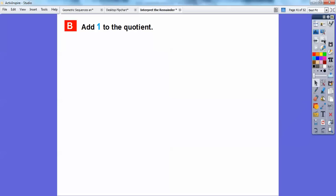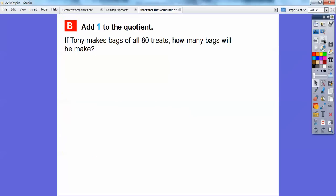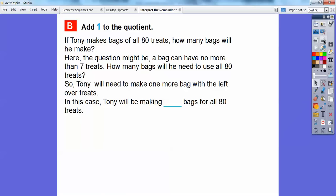Here's a scenario where we add one to the quotient. We might get a question that looks like this. So the division problem, seven goes into 80 with 11, and three sevens left over. So the remainder is three. So what if we ask something like this? What if Tony makes bags of all 80 treats? How many bags can he make? So the question might be something like a bag can have no more than seven treats. How many bags will he need to use all 80 treats? So if he wants to use a bag for the leftover treats, he'll need to make one more bag for the leftover. So he can make the 11 bags plus the leftover one for the leftovers. He'd need a 12th bag in there. So Tony can make 12 bags to make all the 80 treats. He can make 11 full bags, and then he'll need a 12th bag to carry the leftover pieces right there. So that's where we would add one to the quotient to answer the question.